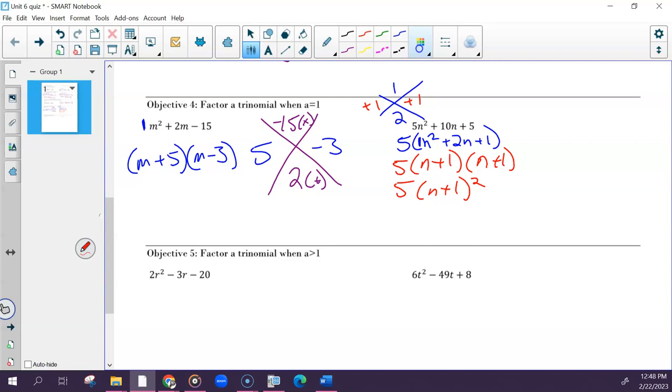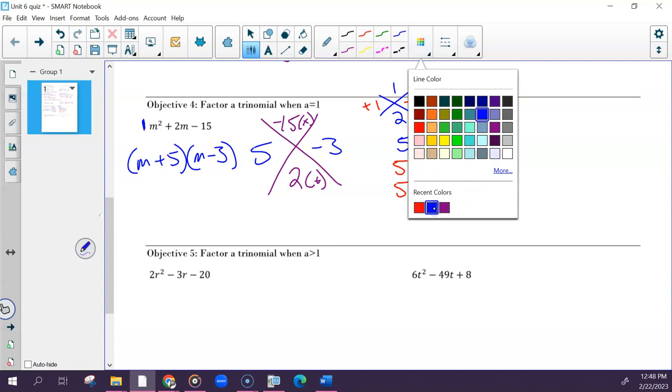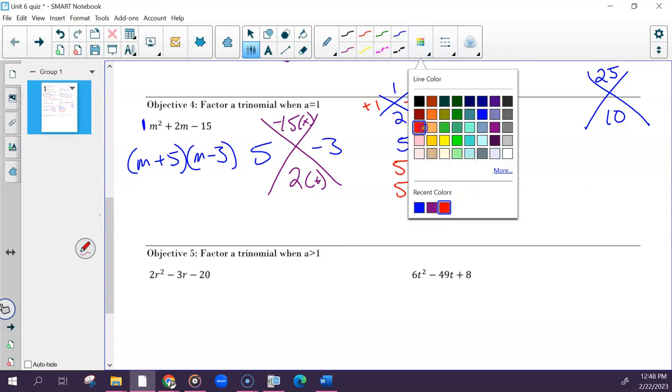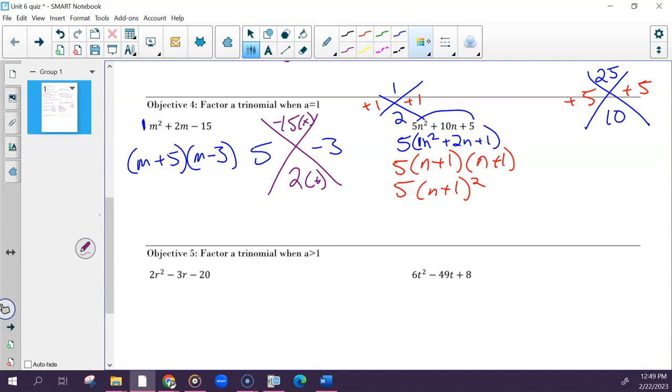So that was one way you could have done that. Some of you took the grouping approach, which was fine, as long as you figured out your GCF eventually. So some of you took 5 and 5 and multiplied that together to get 25. And then you would have been left with 10. So two numbers that multiply to get 25, that add to be 10. The only two numbers that work are 5 and 5. So then you would have to rewrite this into four terms.